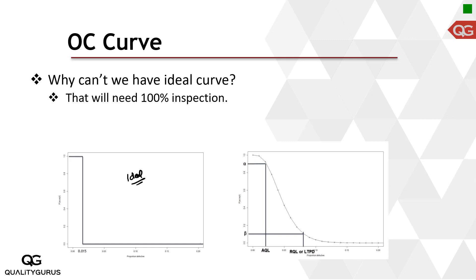For an ideal curve, if you receive a thousand items you must check each and every one. Then you'd know that 15 items defective (1.5% of 1000) is the acceptance level. But that defeats the entire purpose of acceptance sampling — if you have to inspect every item, there's no point in having acceptance sampling. That's why the ideal curve isn't used in practice.